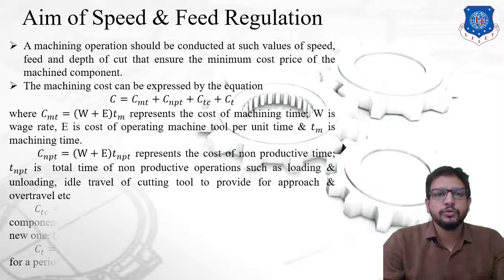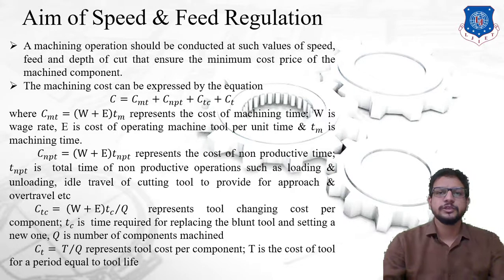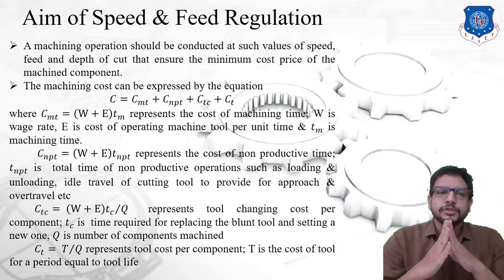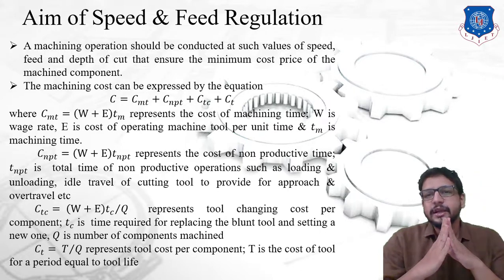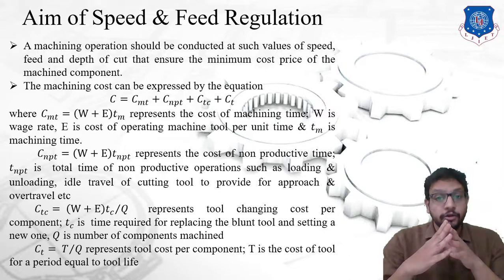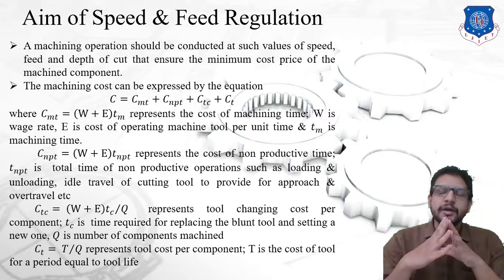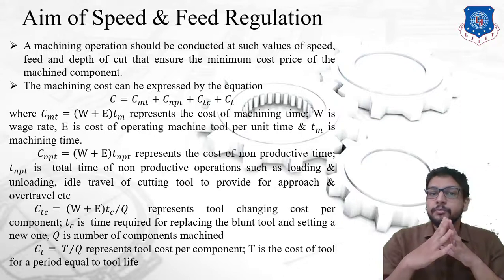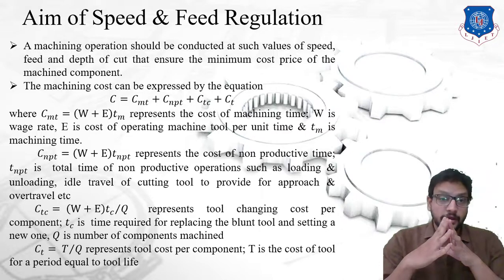Let's begin with our first topic: the aim of speed and speed regulation. The first major requirement is minimum cost of machine components. Various machining operations are performed on a machine tool, such as turning, facing, taper turning, drilling, and threading. All these operations must be carried out at values of cutting speed, feed, and depth of cut that ensure minimum cost price of a machine component. The three main parameters for controlling cost are cutting speed, feed, and depth of cut.